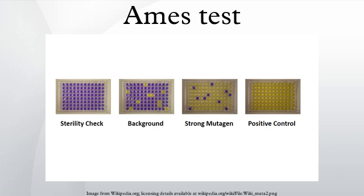The method tests the capability of the tested substance in creating mutations that result in a return to a prototrophic state, so that the cells can grow on a histidine-free medium. The tester strains are specially constructed to detect either frameshift or point mutations in the genes required to synthesize histidine, so that mutagens acting via different mechanisms may be identified.